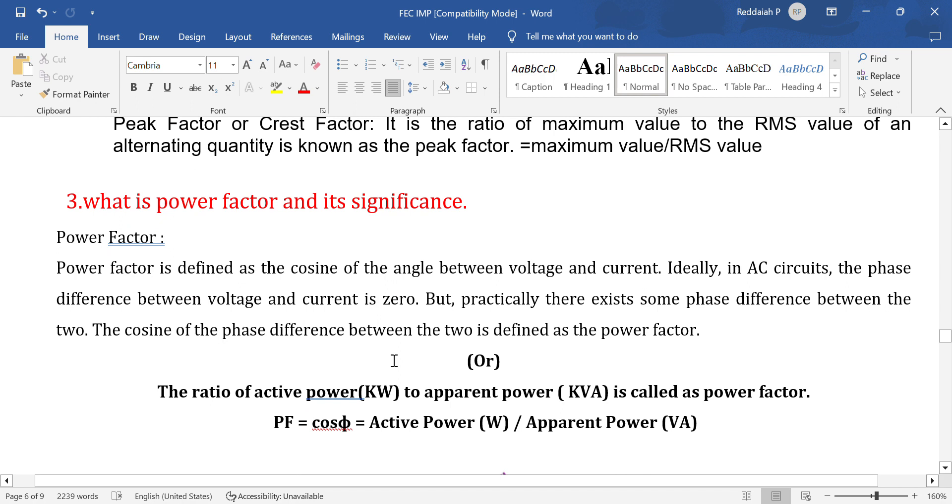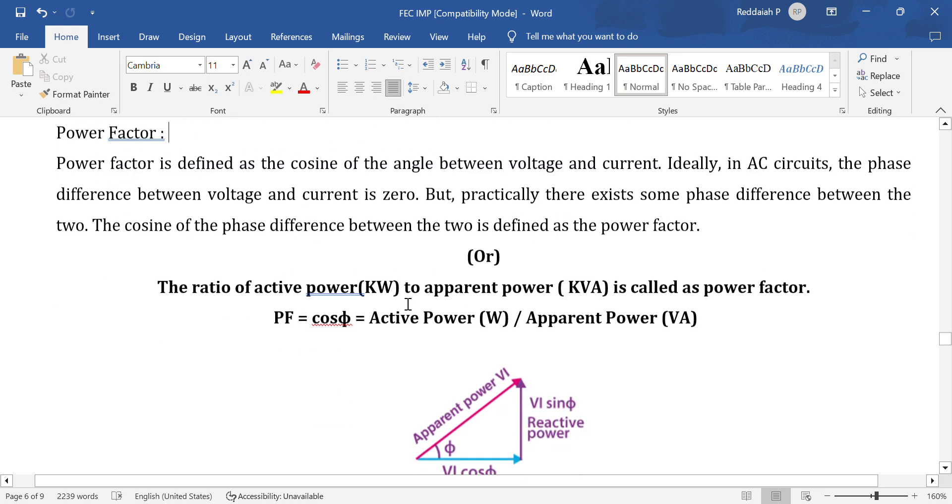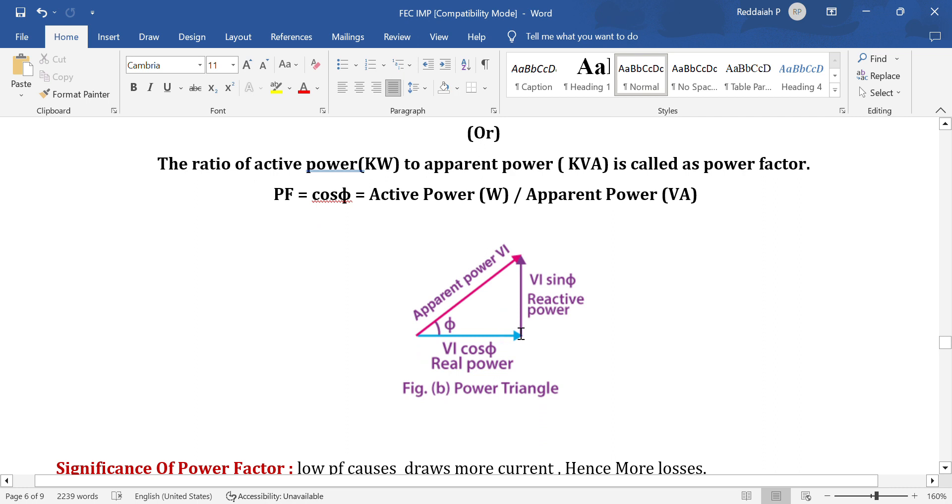Significance of power factor: From the power triangle, you can find out power factor. Real power divided by apparent power gives the ratio, gives power factor. Or the angle between voltage and current. Here V cancels, I cancels. Voltage and current phase angle. It is the cosine of the angle between voltage and current, called power factor.